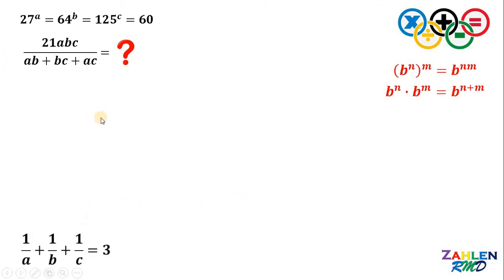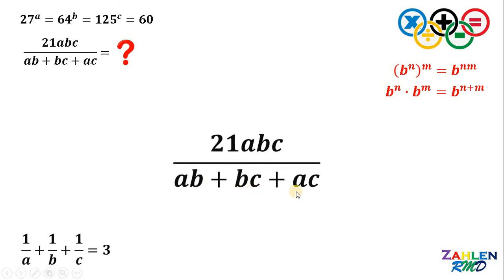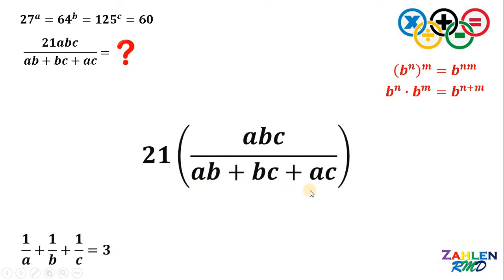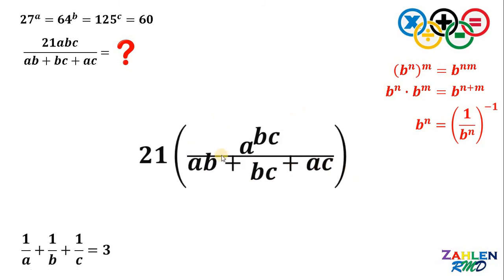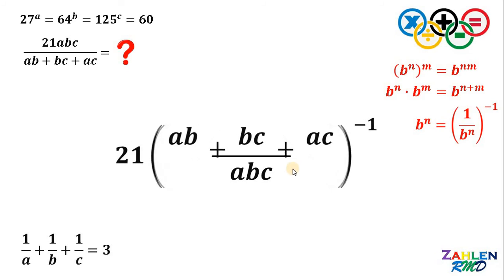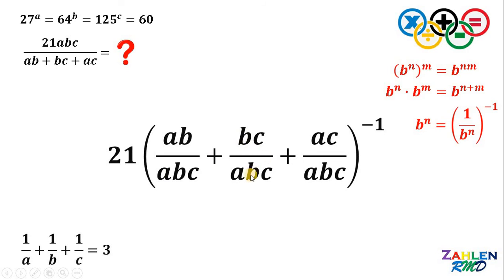Now, let's evaluate the expression we want: 21ABC all over AB plus BC plus AC. This can be written as 21 times ABC all over AB plus BC plus AC. Using the law that b raised to n equals 1 over b raised to negative n, we rewrite the denominator's reciprocal: AB plus BC plus AC all over ABC, raised to negative 1. Separating those fractions: AB over ABC plus BC over ABC plus AC over ABC. AB over ABC is just 1 over C, BC over ABC is just 1 over A, and AC over ABC is just 1 over B.